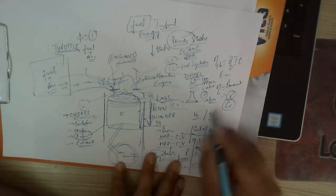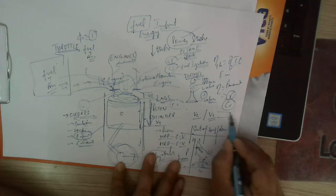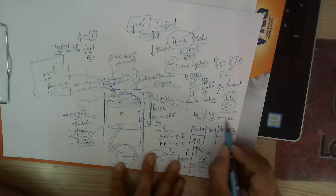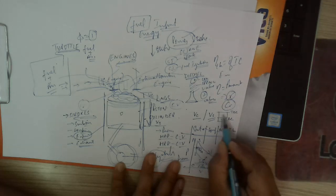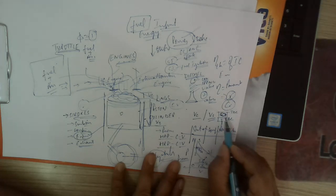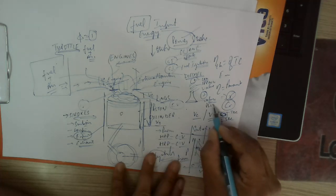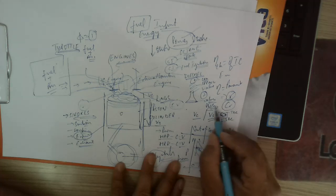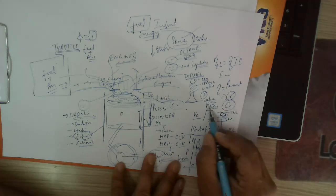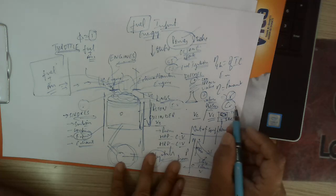The compression ratio is defined by the piston compressing from the bottom dead center (BDC) position to the top dead center (TDC) position, compressing the charge mixture. When the spark plug ignites the compressed fuel, power is generated.